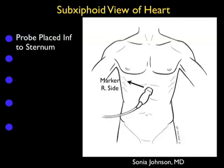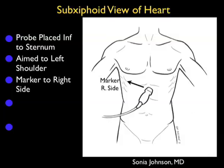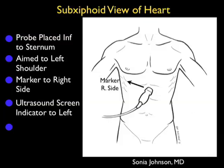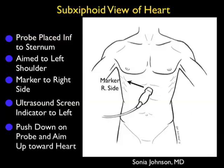As shown in the pictorial, the probe is coming from an abdominal position placed just inferior to the xiphoid tip of the sternum. It's important to lay the probe flat and push down and under the sternum, aiming towards the patient's left shoulder. The marker dot on the probe should be towards the patient's right side, with the ultrasound screen indicator dot over towards the left of the screen. Put your hands on top of the probe and push down and up to achieve the correct imaging plane underneath the sternum.